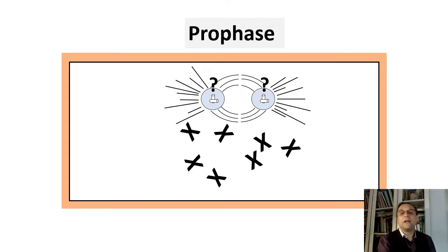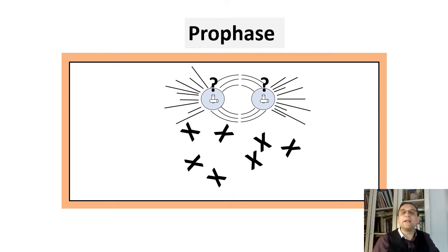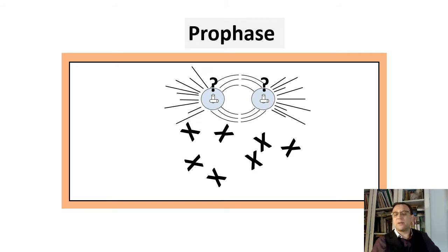An interesting detail about centrioles: in recent years, the role of centrioles in organizing the spindle has been questioned. It has been noted, for example, that flowering plants — which lack centrioles — have perfectly good spindles. It has further been noted that all organisms that have flagella and/or cilia also have centrioles. A counter-hypothesis suggested that centrioles are only seeds that give rise to basal bodies and flagella. Basal bodies are unpaired centrioles that anchor flagella and cilia and play a role in their movement.